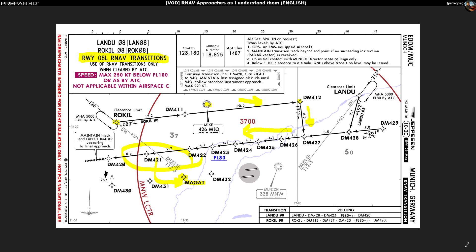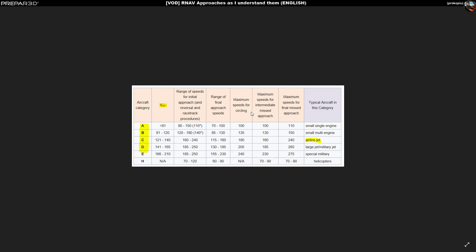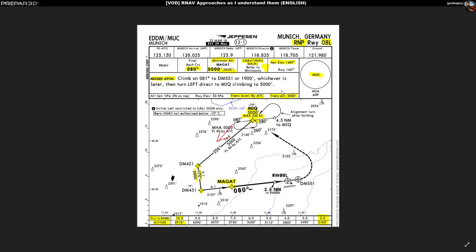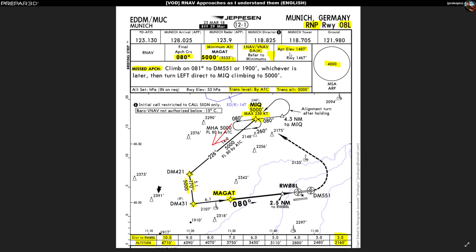You're flying this with your flight management computer up to the point where the controller gives you a heading, and they'll give you vectors to MAGAD or tell you to fly direct to MAGAD. MAGAD is what I call the initial approach fix for the RNAV approach. It also has some significance for radio-navigation-based procedures at Munich. Now let's look at the actual RNAV chart.